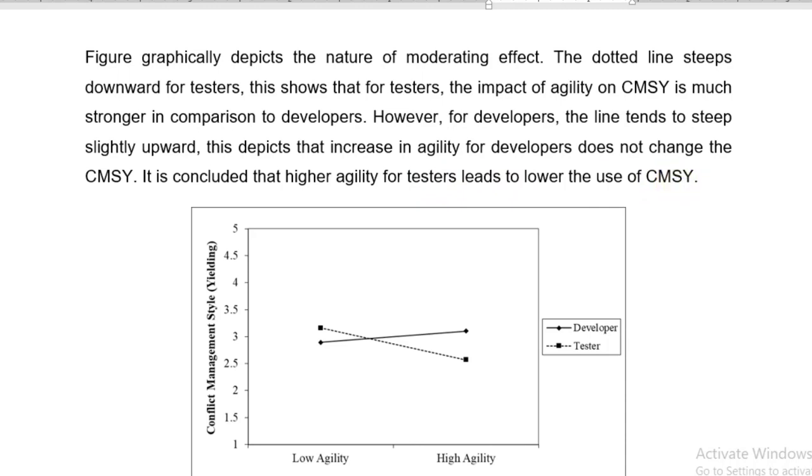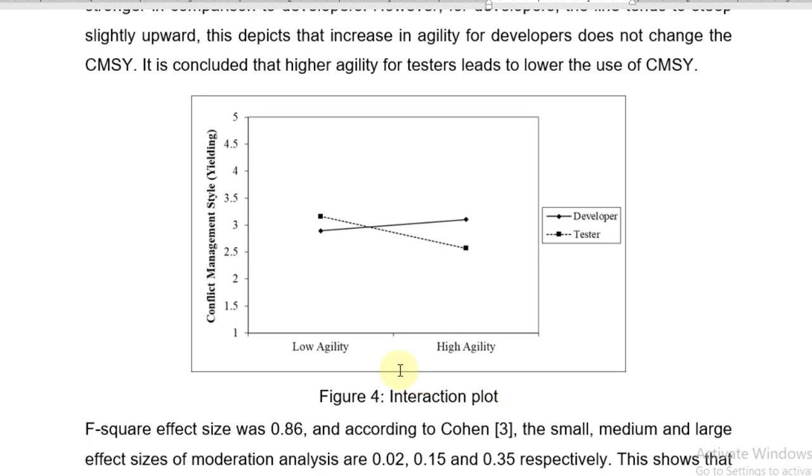How I have concluded? Because you can see on the x-axis as the agility increases from low level to high level for the tester, the value is coming down. So CMSY value decreases.